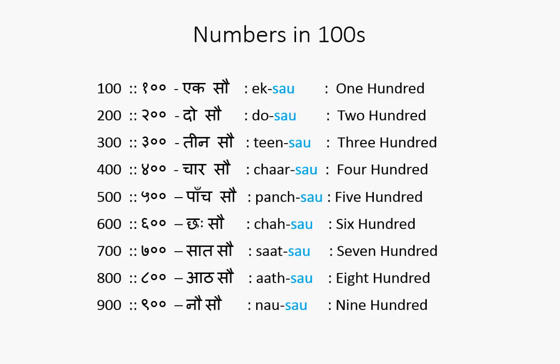And finally, one thousand is Hazaar. Hazaar — Ek Hazaar or simply Hazaar. Ek Sao — one hundred. Do Sao — two hundred. Teen Sao — three hundred. Chaar Sao — four hundred. Paanch Sao — five hundred. Chaai Sao — six hundred. Saat Sao — seven hundred. Aat Sao — eight hundred. Nao Sao — nine hundred. And then Ek Hazaar or Hazaar — one thousand.